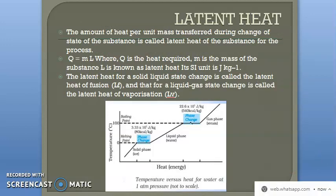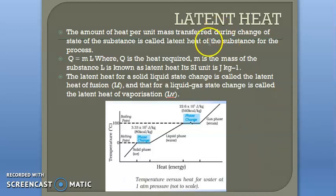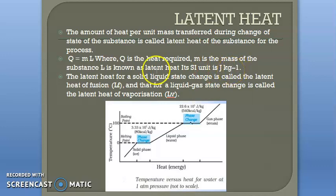Now we have talked about latent heat. The amount of heat per unit mass transferred during a change of state of a substance is known as the latent heat of that substance. This depends on whether the process is fusion or vaporization — we have the latent heat of fusion and the latent heat of vaporization. Latent heat of fusion is represented as L_F.